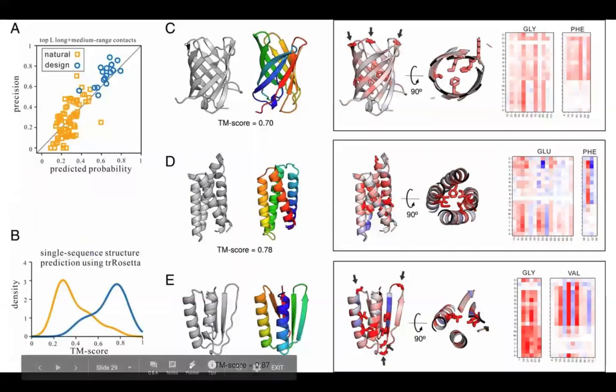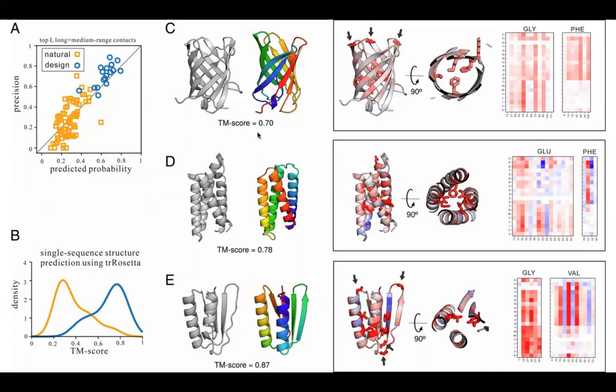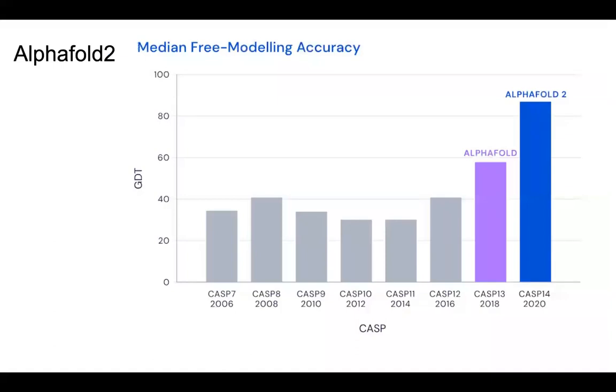And at the end, you get nice models. So this is some examples. So this is the one that's the model, and this is the true one. And the TM score, which is a measure of how good a model is, that is one if it's perfect, is 0.87 or high in all these cases. So you can get quite nice predictions. And this is actually common. In many cases, you get these nice predictions.